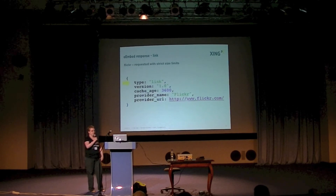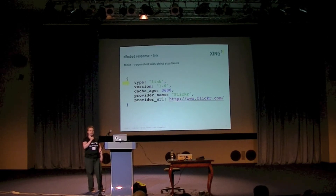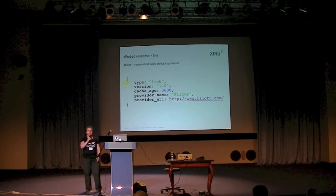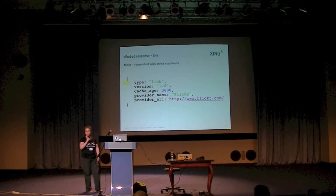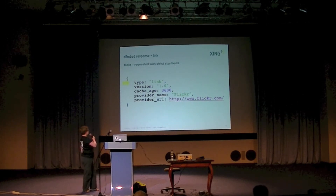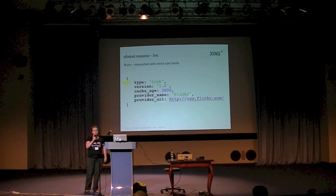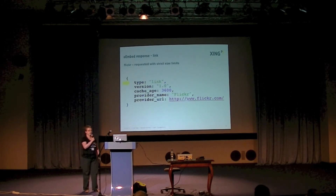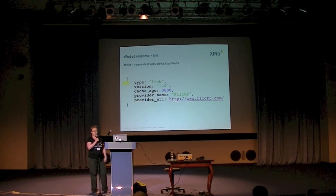Last but not least, a response of type 'link' basically tells the consumer that there is nothing it can embed and that it should display a link instead. A common mistake is to assume that this response contains a field 'url'. According to the specs, it doesn't have to. So the consumer is expected to link to the URL it used in the request. You can actually get this response from Flickr if you request it with a very strict size limit — if they don't have an image file small enough, Flickr responds with type 'link'. That's inconsistent across providers; many other providers choose to return a 'photo' type instead.